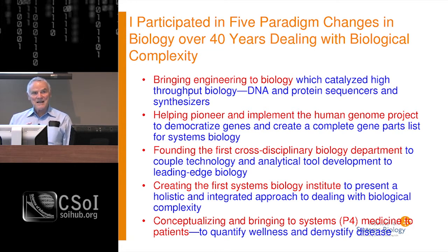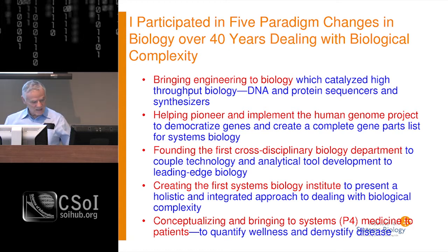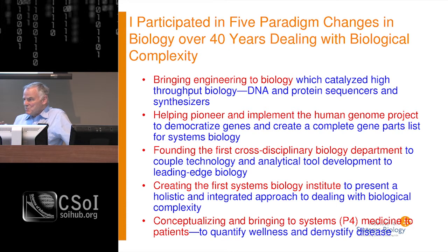The Human Genome Project was enormously controversial at the time. At the first meeting in 1985, twelve of us assembled to assess it came to two conclusions: one, it was feasible although difficult; and two, we were split vehemently six to six on whether it was a good idea. The entire biological community was probably 90 percent opposed to it, as was the National Institutes of Health. The arguments against it were that it was big science, that most of the genome was junk, and so forth. We started the project in 1990 and it was finished in 2003.